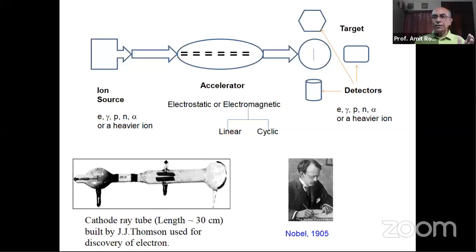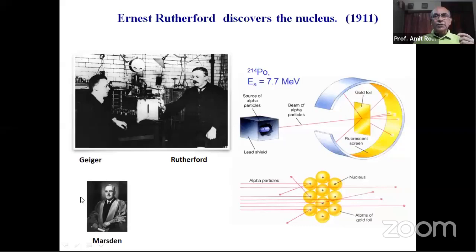Bigger and bigger accelerators were built, but it all started with Rutherford's discovery of the nucleus. Around 1911, Lord Rutherford, a professor at Cambridge working in the Cavendish Laboratory, along with Hans Geiger and Geiger's student Ernst Marsden, performed the famous Rutherford experiment. He used a source of alpha particles — polonium-214, an isotope of polonium given to him by Madame Curie — to bombard a gold foil. He expected most alpha particles to pass straight through.